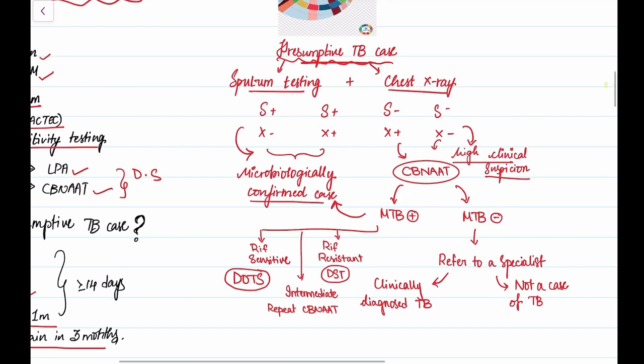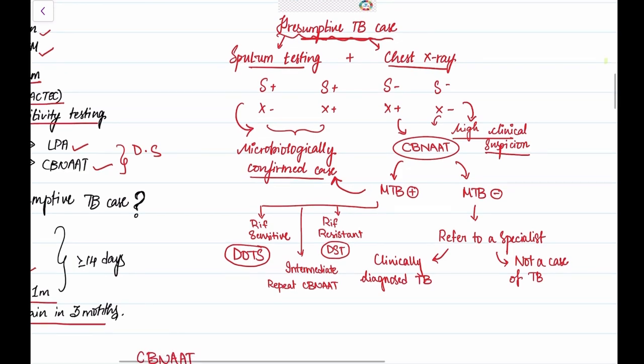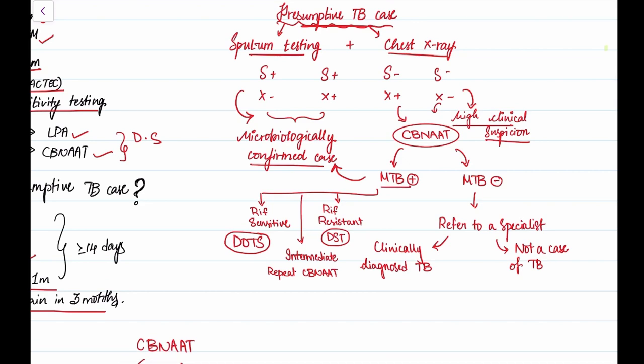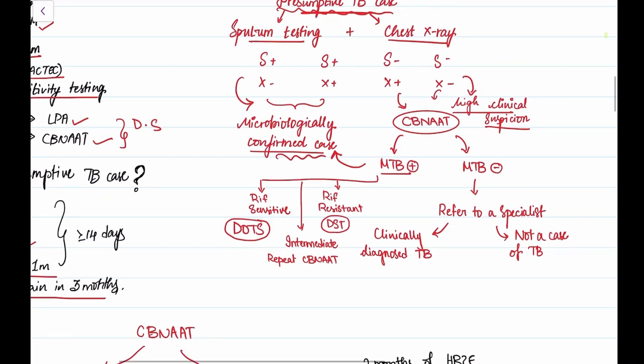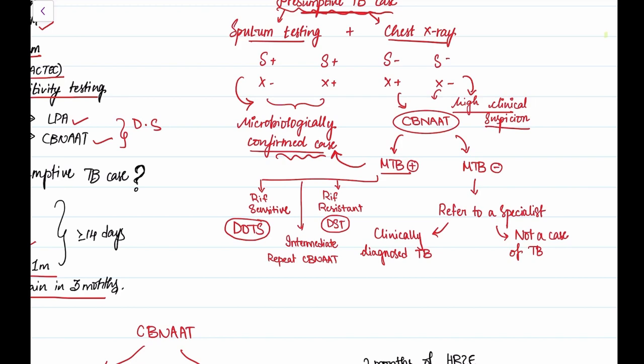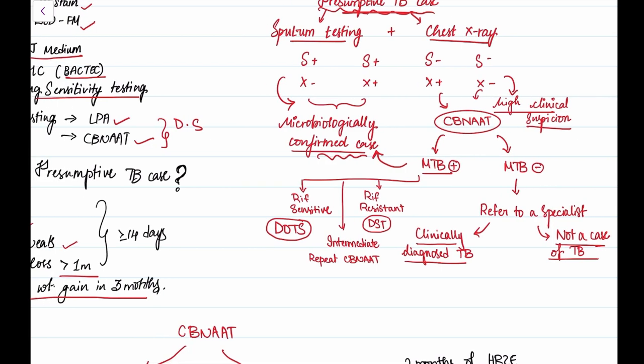In CB-NAAT, if we get MTB positive, it's again said to be microbiologically confirmed case. But if we get negative, we refer them to a TB specialist. If there's still high clinical suspicion, it's called clinically diagnosed TB. If there's no suspicion, we declare it as not a case of TB. After this microbiologically confirmed case on CB-NAAT, we also get rifampicin resistant or rifampicin sensitive. If it's rifampicin sensitive, we give DOTS, and if resistant, we give drug sensitivity testing.